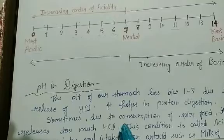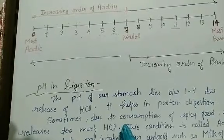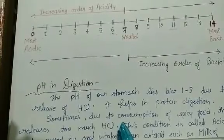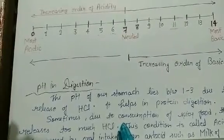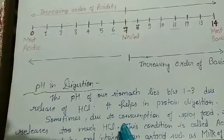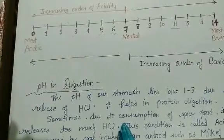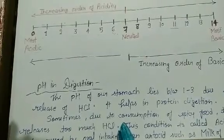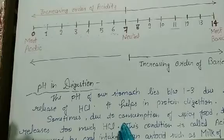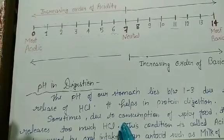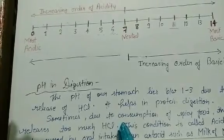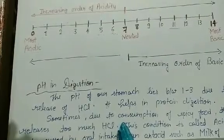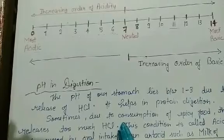In today's video we will discuss the importance of pH in our everyday life — how does pH affect our everyday life and what is its role. As you all know, pH lower than 7 is acidic, pH higher than 7 is basic, and pH 7 represents neutral compounds such as water or some salts.